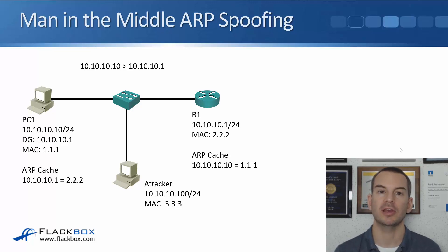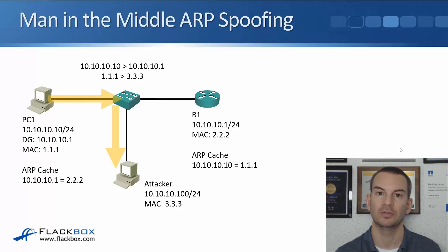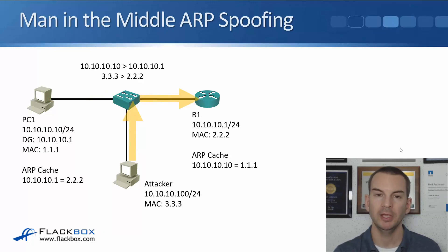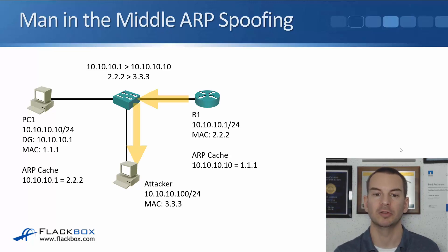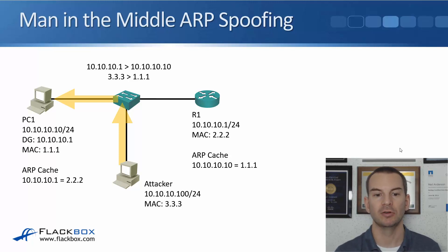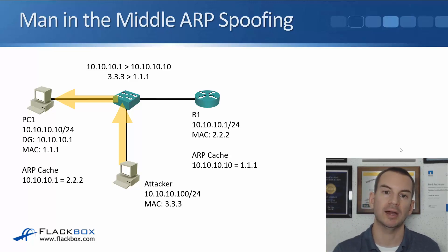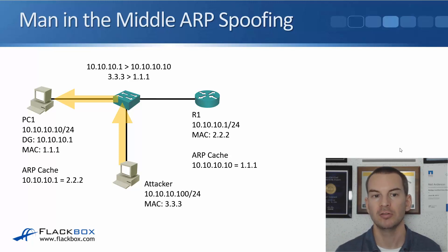Now when the PC sends traffic from 10.10.10.10 to 10.10.10.1, it looks in its ARP cache and sees it should send to 3.3.3 — so it goes to the attacker, not the router. The attacker then forwards the traffic on to the router. Return traffic from the router also goes to 3.3.3 because the router's ARP cache was poisoned too, so the attacker relays it back to the PC. Normally a switch only sends traffic out the relevant port, so an attacker can't sniff other traffic. But with this man-in-the-middle ARP spoofing attack, all traffic flows through the attacker, allowing them to read all communications. It's a huge security issue.